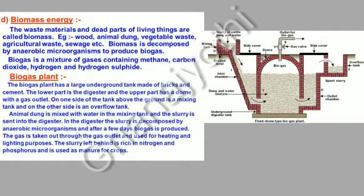The biogas plant has a large underground tank made of bricks and cement. The lower part is the digester and the upper part has a dome with a gas outlet. On one side above the ground is a mixing tank and the other side is an overflow tank. Animal dung is mixed with water in the mixing tank and the slurry is sent into the digester, where it is decomposed by anaerobic microorganisms. After a few days, biogas is produced, taken out through the gas outlet and used for heating and lighting. The slurry left behind is rich in nitrogen and phosphorus and used as manure for crops.